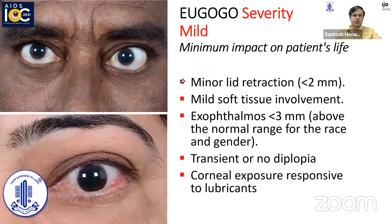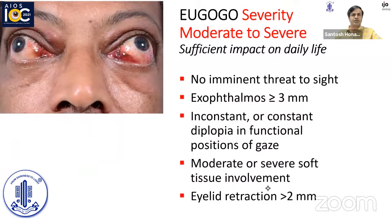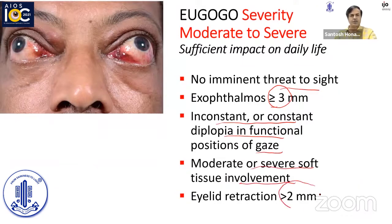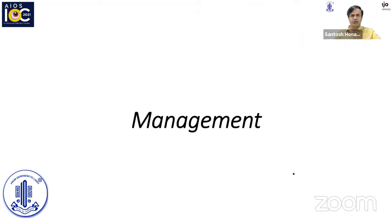Severity is based on EUGOGO classification. Mild is with minimum impact on the patient's life, where there would be minor lid retraction, mild soft tissue involvement, exophthalmos of less than 3 mm, and transient or no diplopia, or corneal exposure responsive to topical lubricants alone. Moderate to severe is when the patient has no imminent threat to sight but has exophthalmos of more than 3 mm, inconstant or constant diplopia in functional positions of gaze, moderate to severe soft tissue involvement, or eyelid retraction of more than 2 mm. Very severe or sight-threatening cases have imminent threat to vision with dysthyroid optic neuropathy or risk of corneal breakdown due to severe exposure.